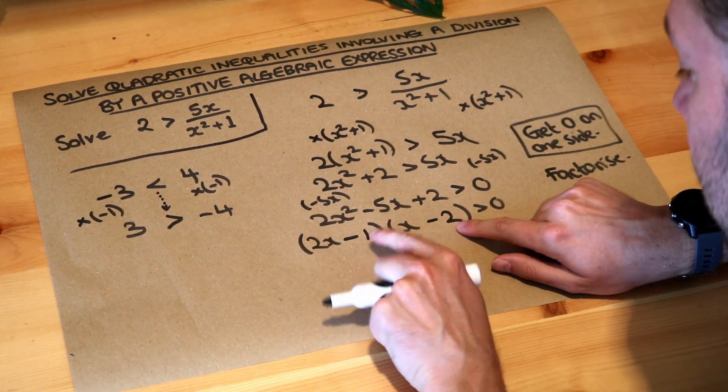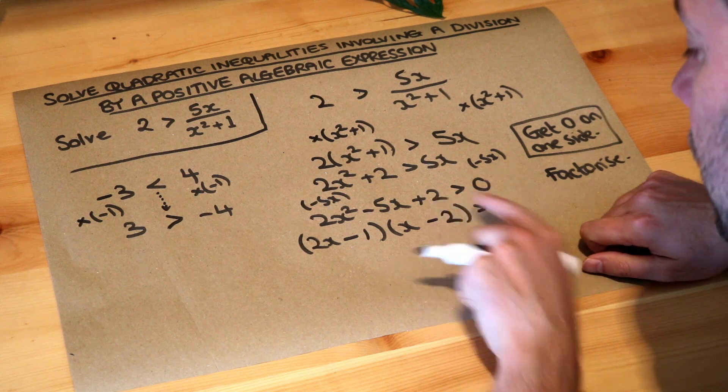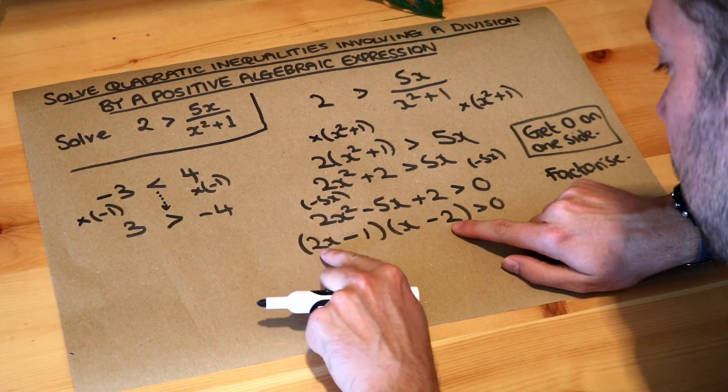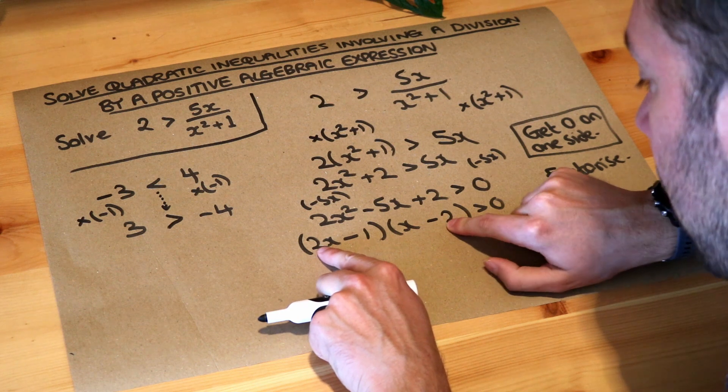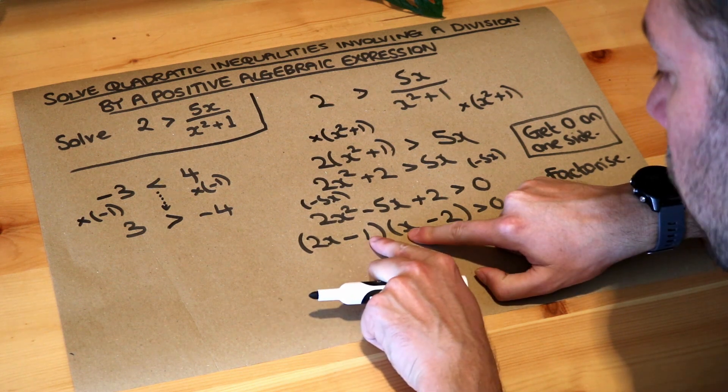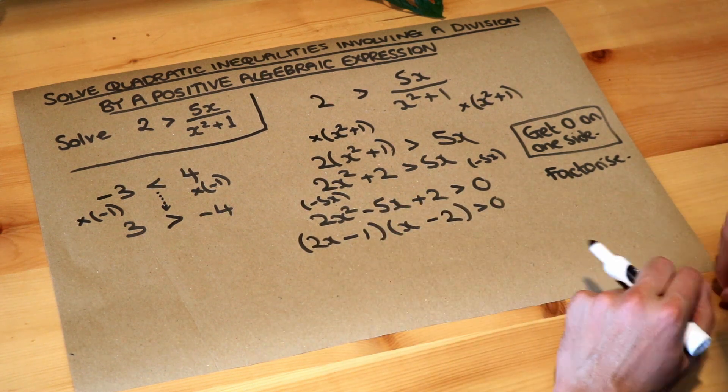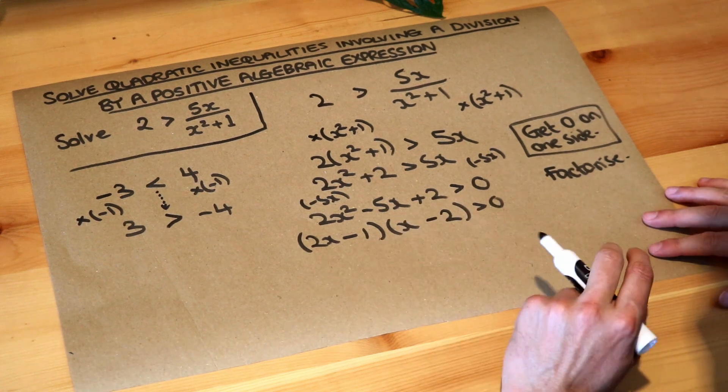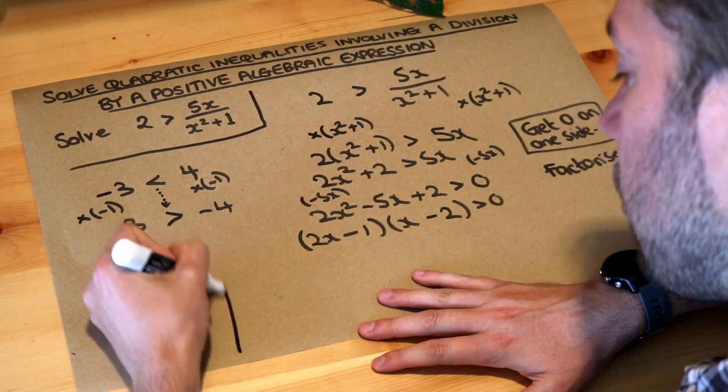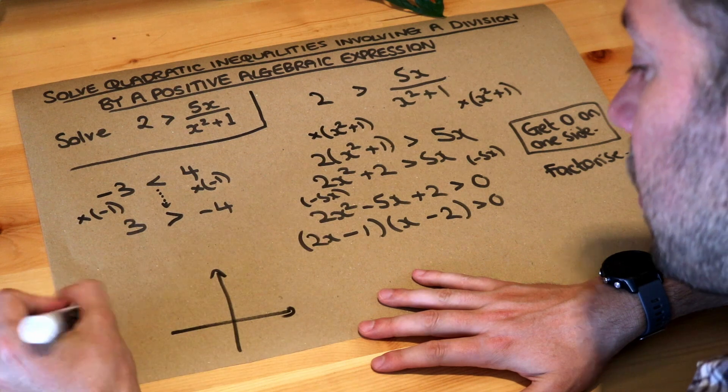These two numbers here in expansion will give you the plus 2, but then also look in terms of the x terms, 2x times minus 2, that's minus 4x, minus another 1x, that will give you in the expansion minus 5x, so this is right. And then what do we do next? We sketch the quadratic. We sketch.